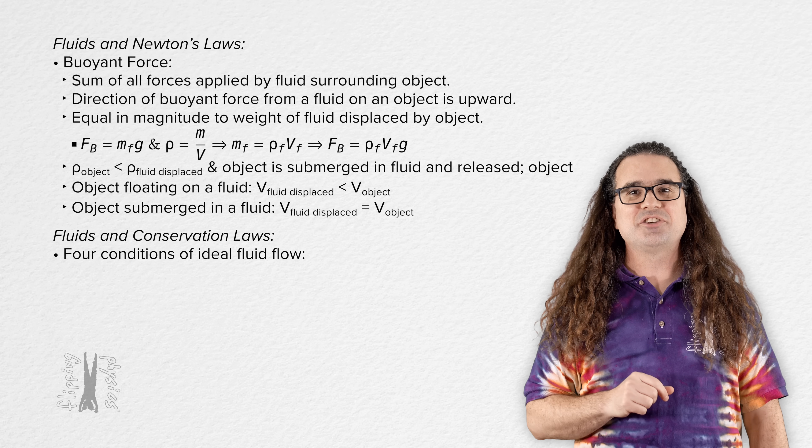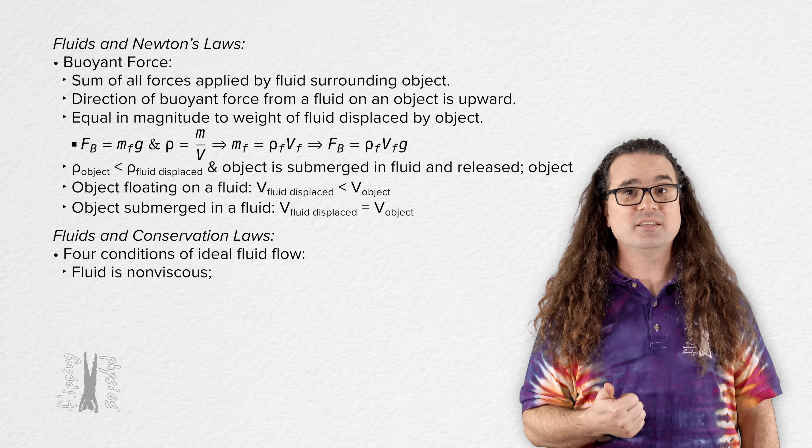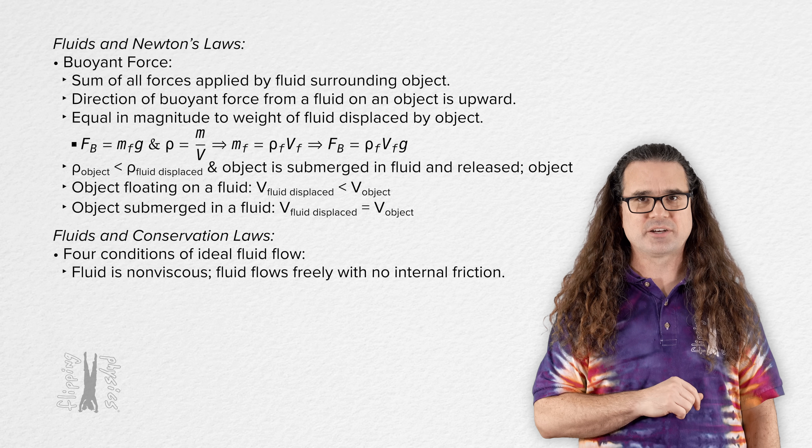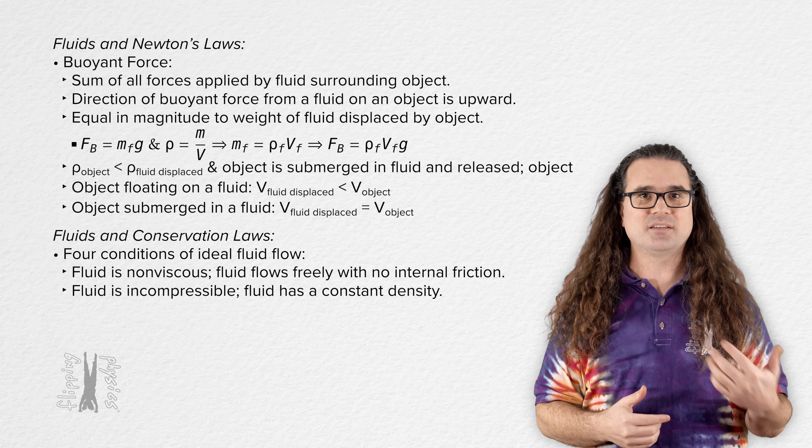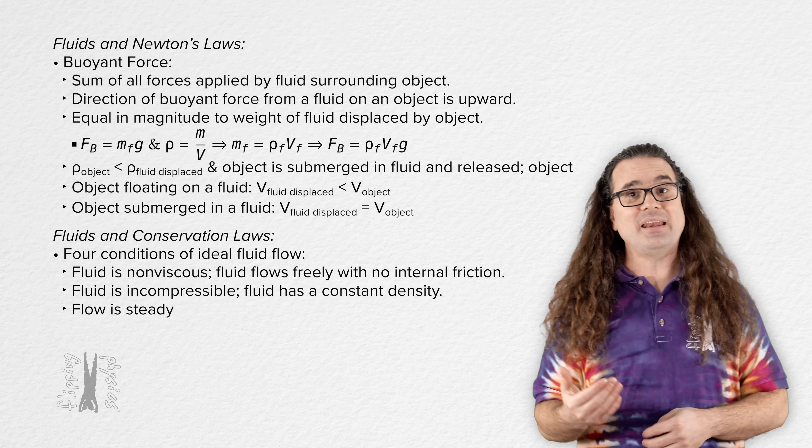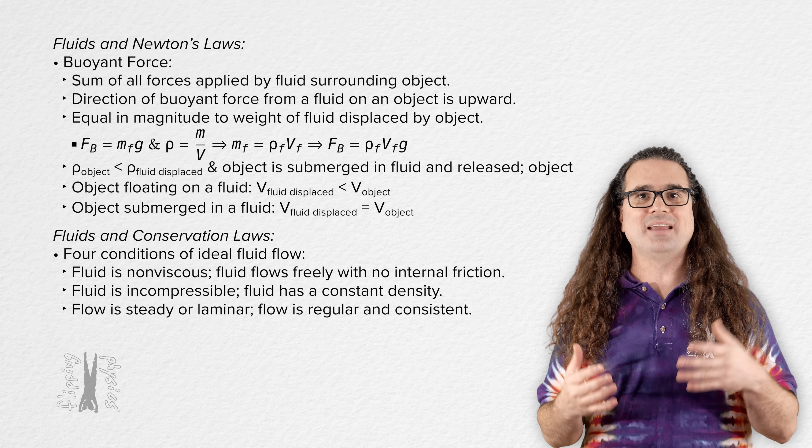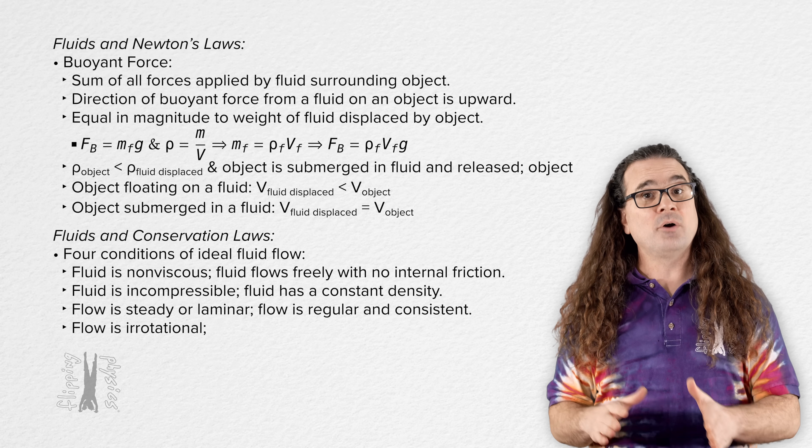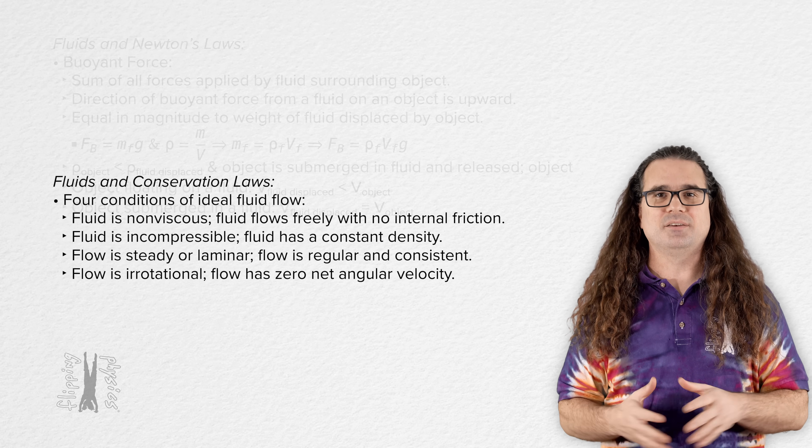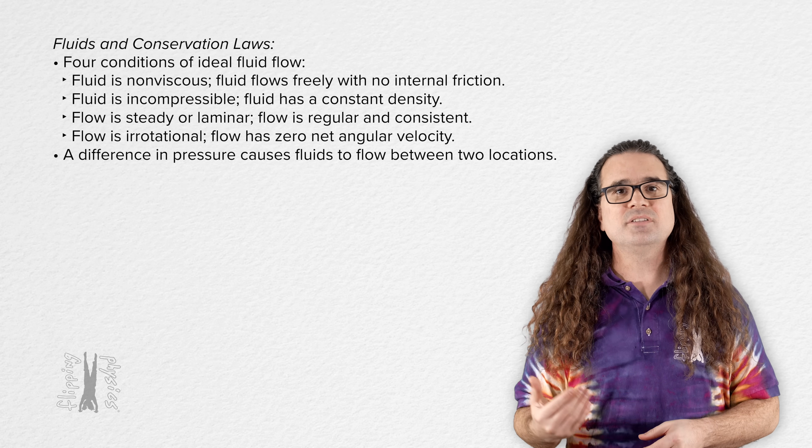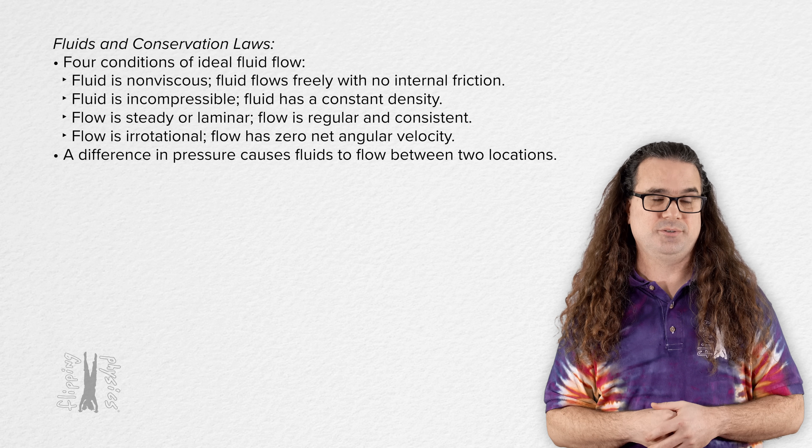Next, the four conditions of ideal fluid flow are: the fluid is non-viscous, that means the fluid flows freely with no internal friction. The fluid is incompressible, that means the fluid has a constant density. The flow is steady, the physics term for this is laminar, that means the flow is regular and consistent. And the flow is irrotational, that means the flow has zero net angular velocity. Realize a difference in pressure causes fluids to flow between two locations.